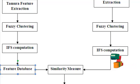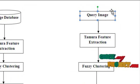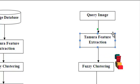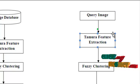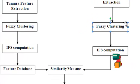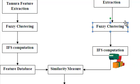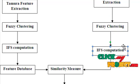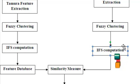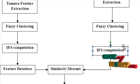On the user side, this is the query image selected by the user. Here also, we extract the Tamura features: coarseness, contrast, and directionality. We then proceed with fuzzy clustering so that we can determine which cluster the given query image belongs to. After determining this cluster, we compute the membership degree and the hesitation degree for that particular cluster.